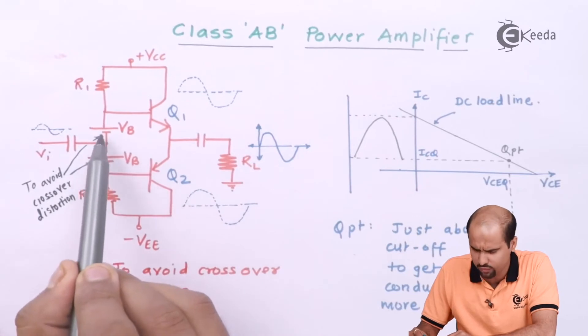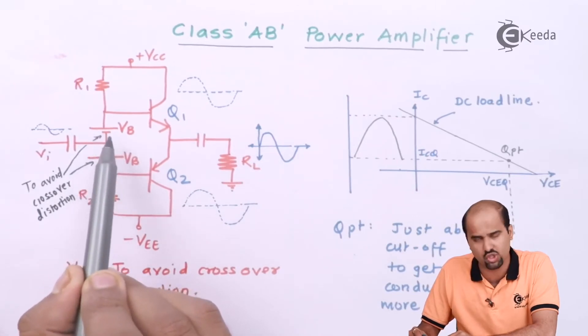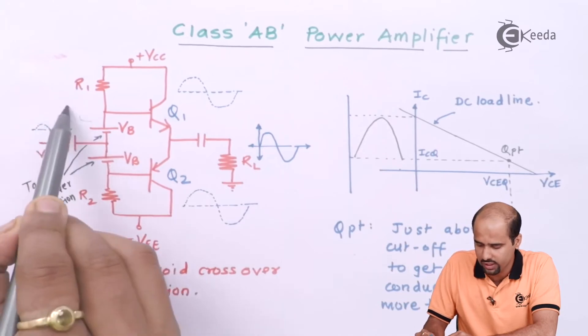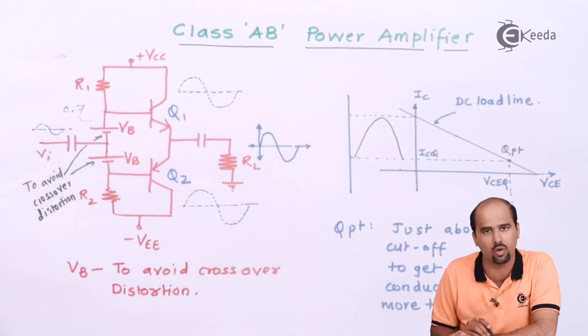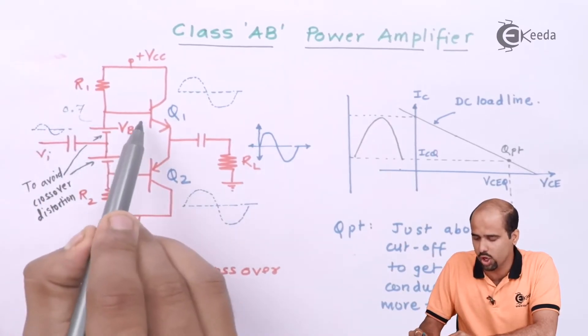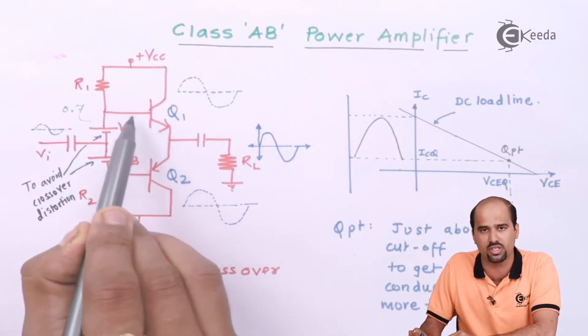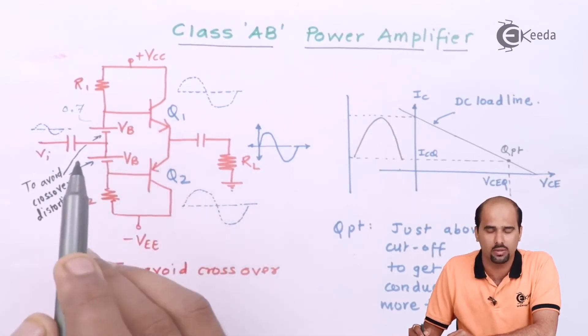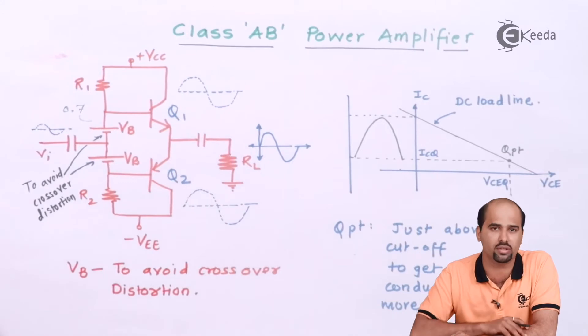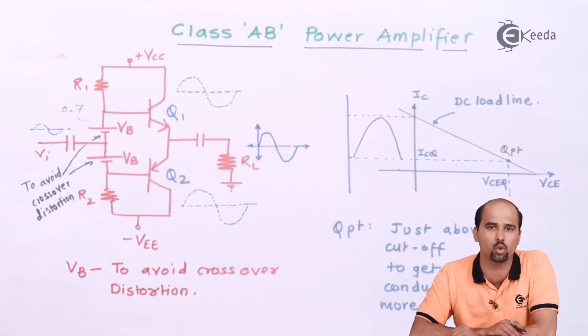If I'm talking about VB, then what VB is doing? VB is generally having voltage 0.7. That is nothing but to avoid this particular voltage 0.7. So this current will not wait till 0.7 to reach.